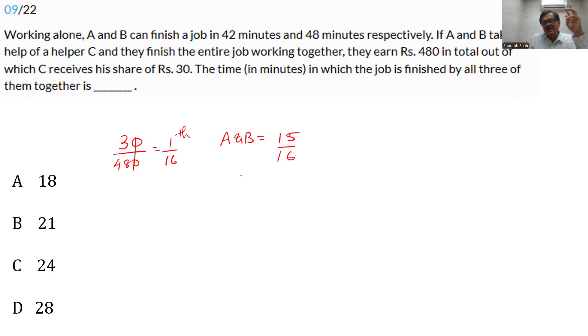Now what we need, all that we need is, in what time would A and B have done the full work? And then multiply by 15 by 16. So simply multiply by 42 into 48 by 42 plus 48, directly write 90. I hope you remember this shortcut which has been taught to you in the classes. 15, 90 gives you a 6, 6, 48 gives you an 8, 8, 16, 2 and 2, 42 gives you 21 days is your answer. The job was finished by all three in 21 days.